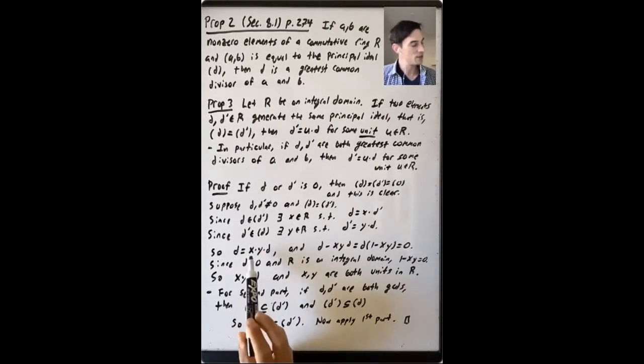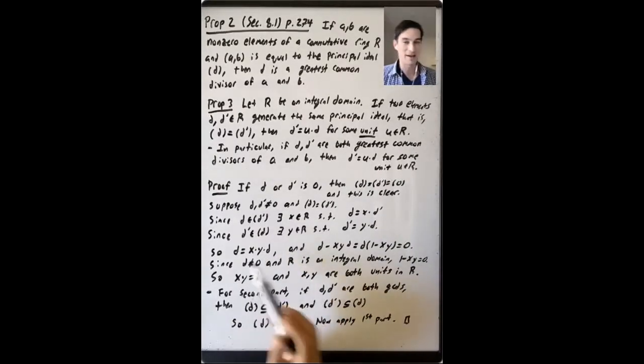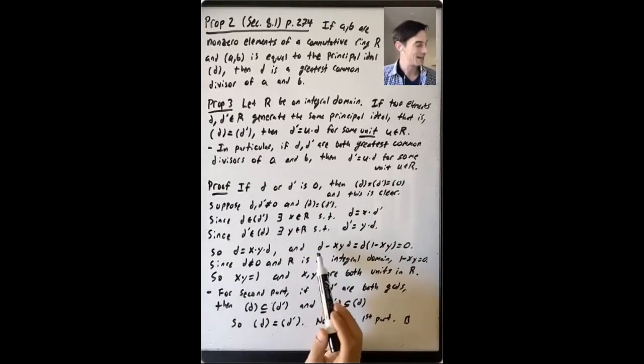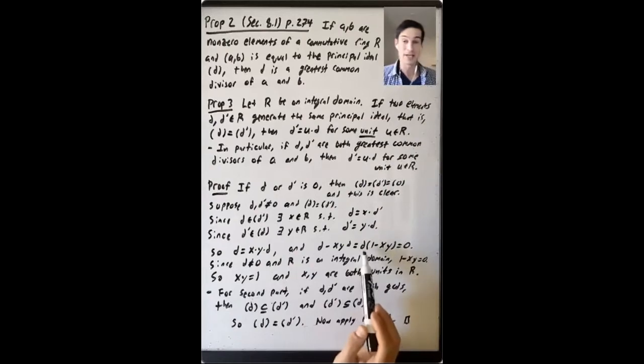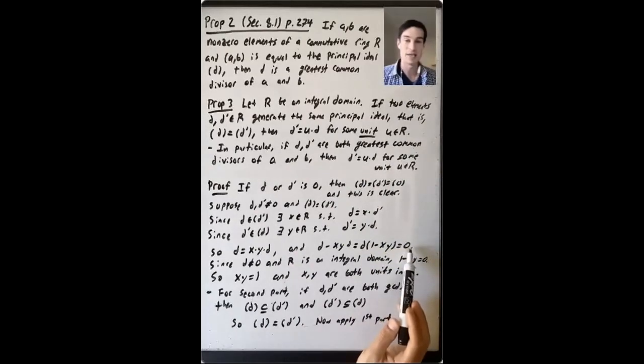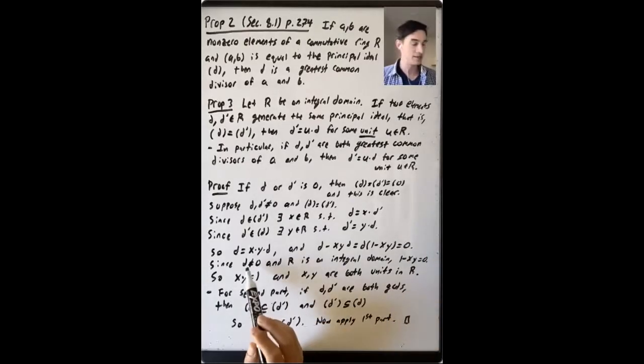So D equals XYD. So let's subtract and get that D minus XYD, which is by the distributive law D times 1 minus XY equals 0. And D is not 0.